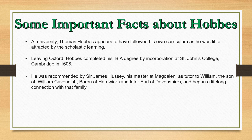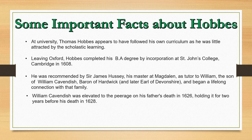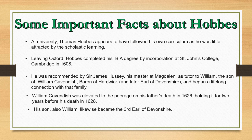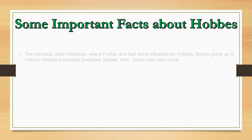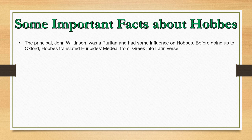He was recommended by Sir James Hussey, his master at Magdalen, as tutor to William, the son of William Cavendish, Baron of Hardwick, and began a lifelong connection with that family. William Cavendish was elevated to the Peerage on his father's death in 1626, holding it for two years before his death in 1628. His son also became the third Earl of Devonshire. Hobbes served as tutor and secretary to both men. The principal, John Wilkinson, was a Puritan and had some influence on Hobbes.